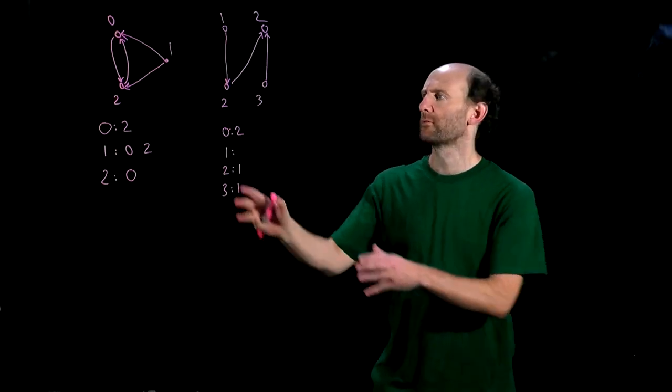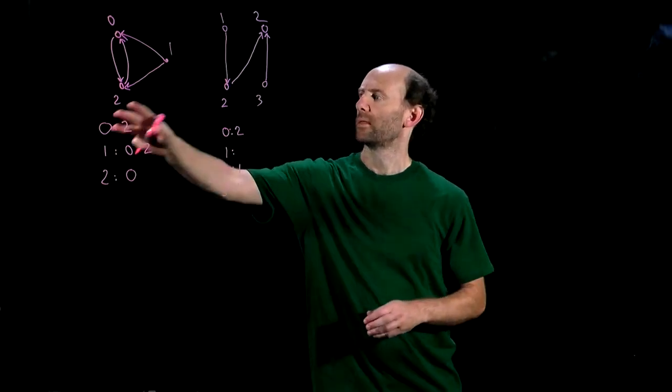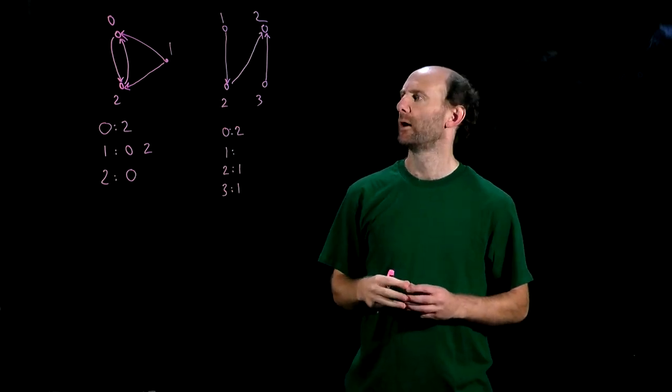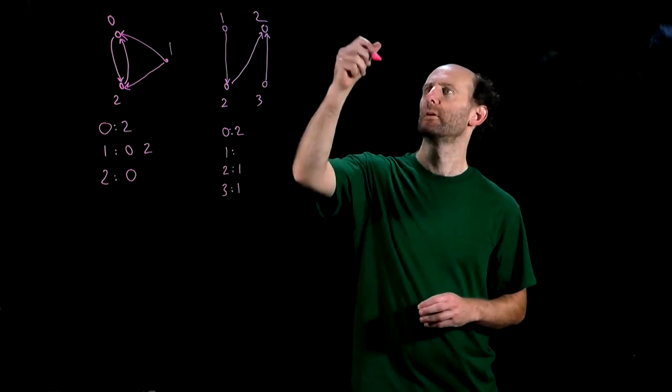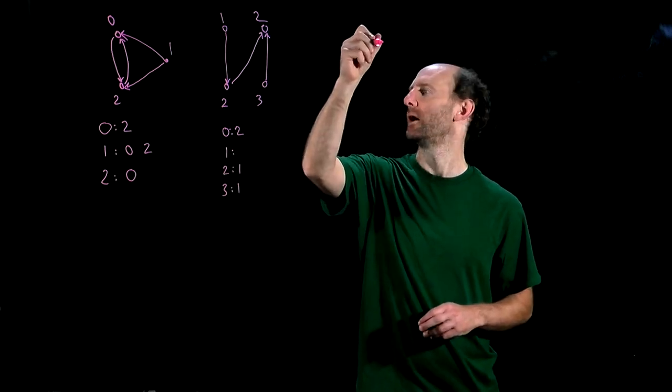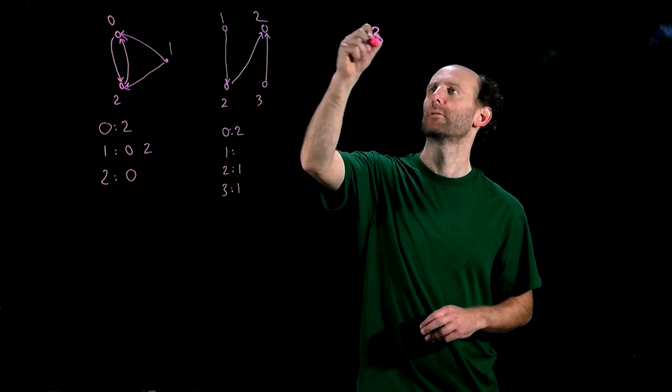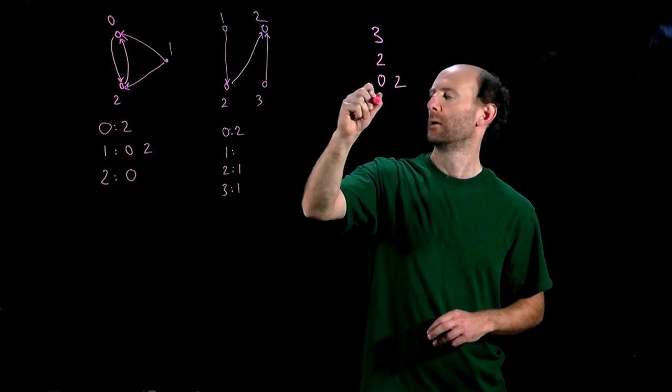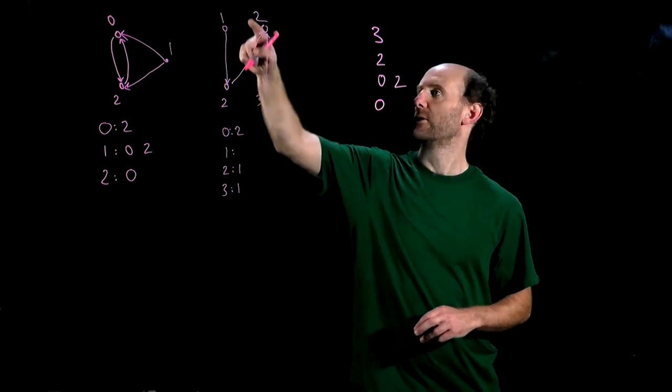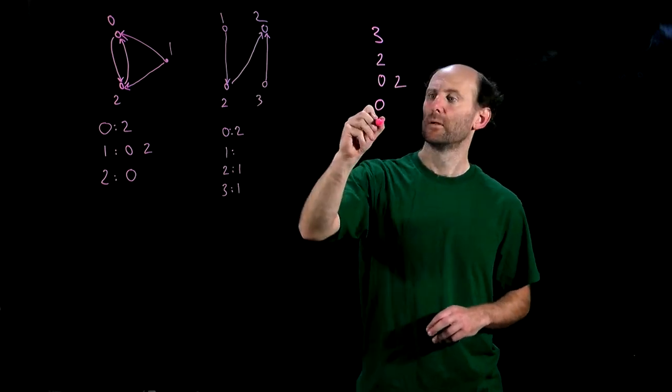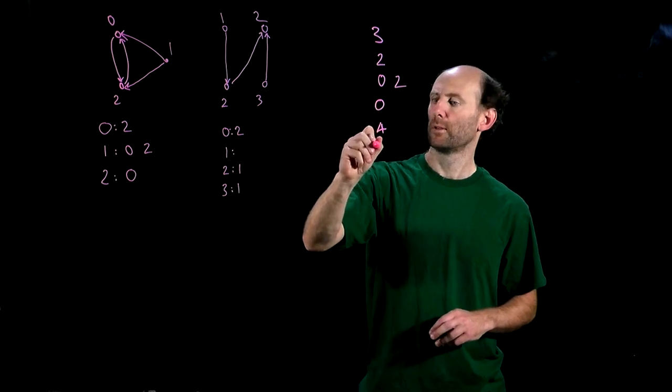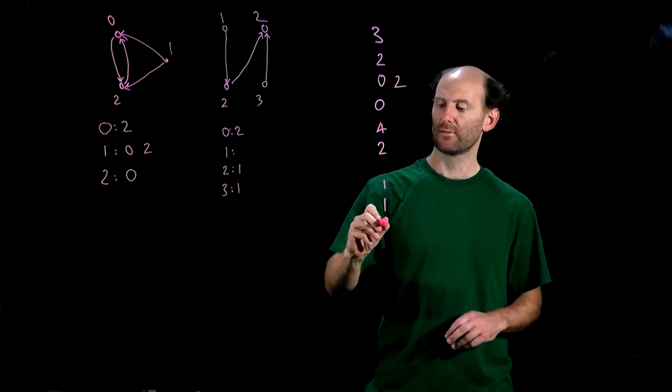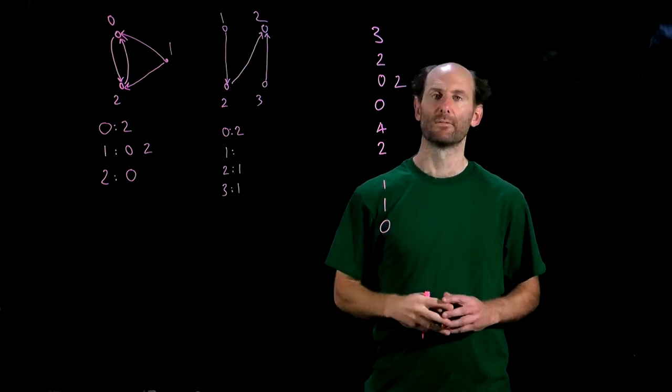For example, with the graph shown here with these adjacency lists we can represent them in the single file by first writing the first graph. So on the first line of the file we'll have the order of that graph, 3, followed by the 3 adjacency lists. Gap, 1, 1 and we'll finish the file with a graph of order 0.